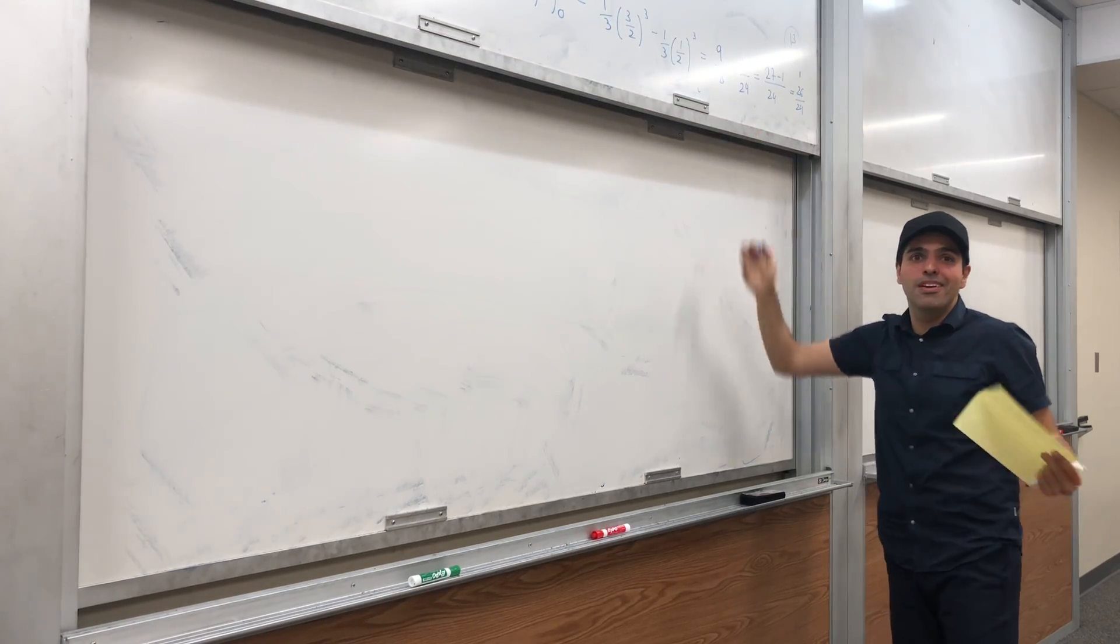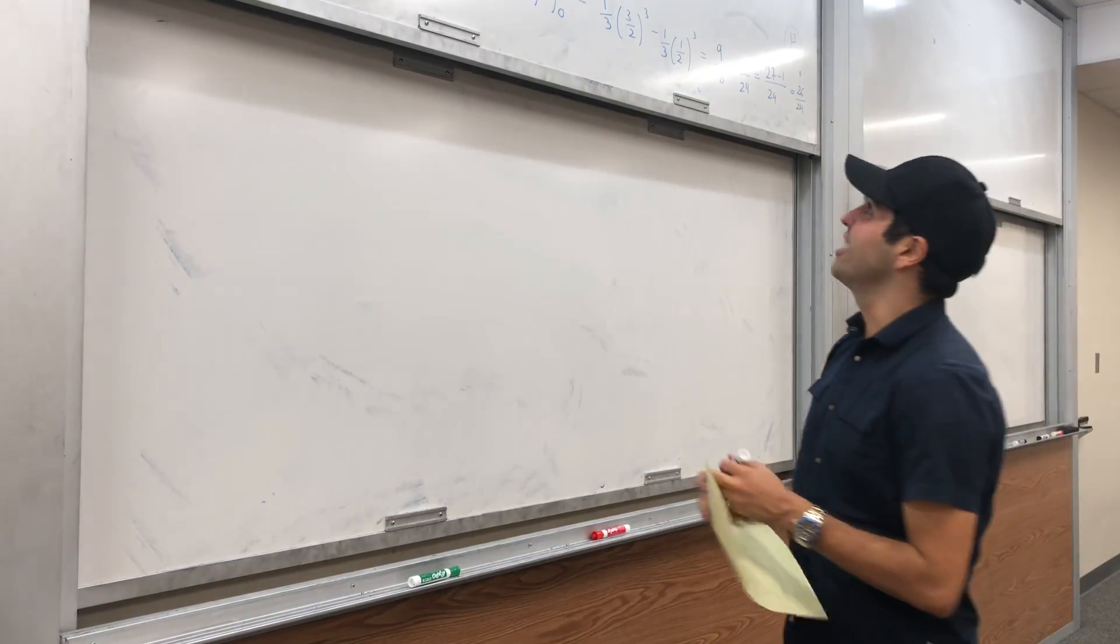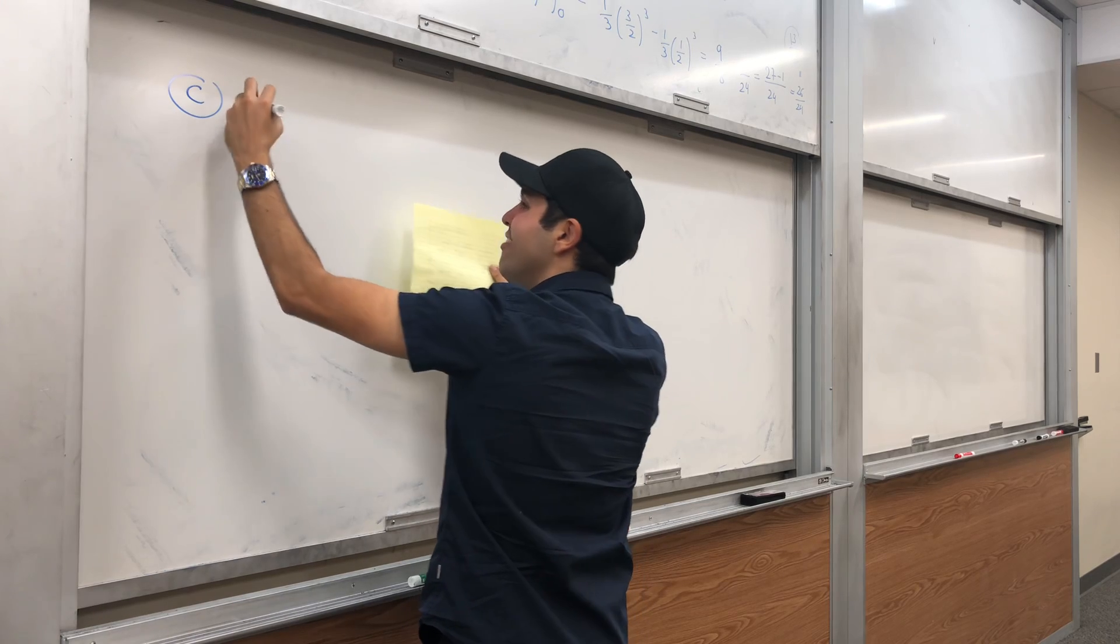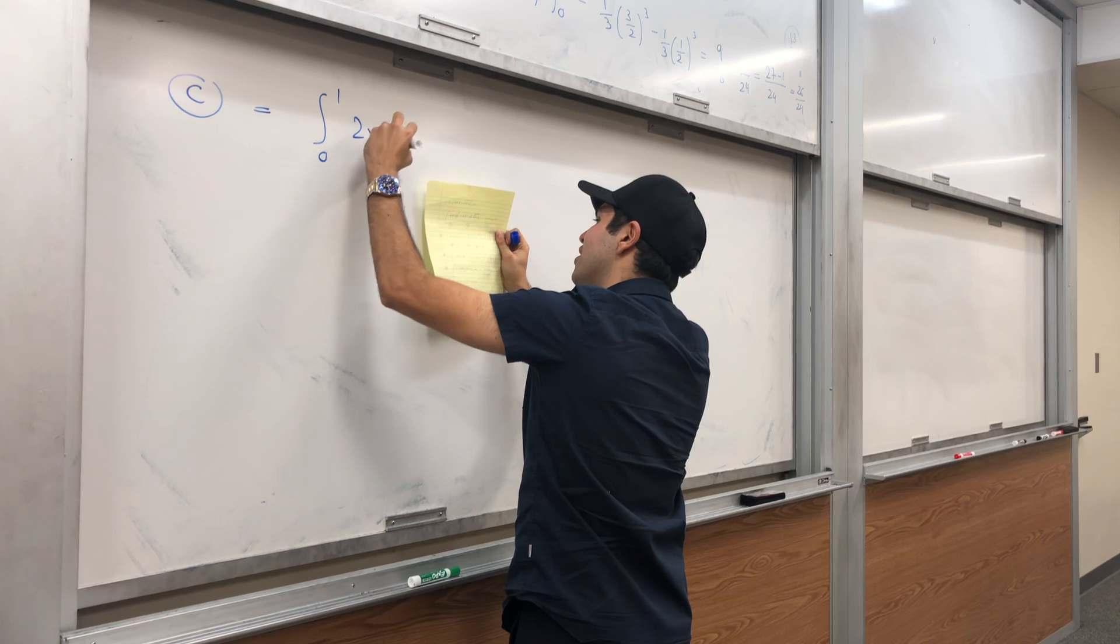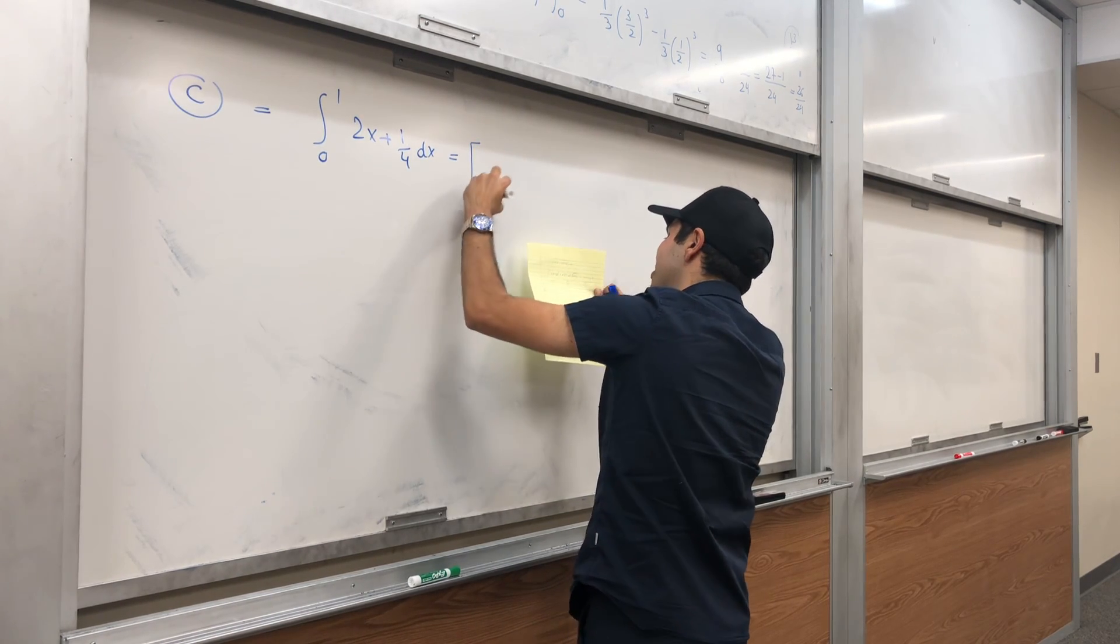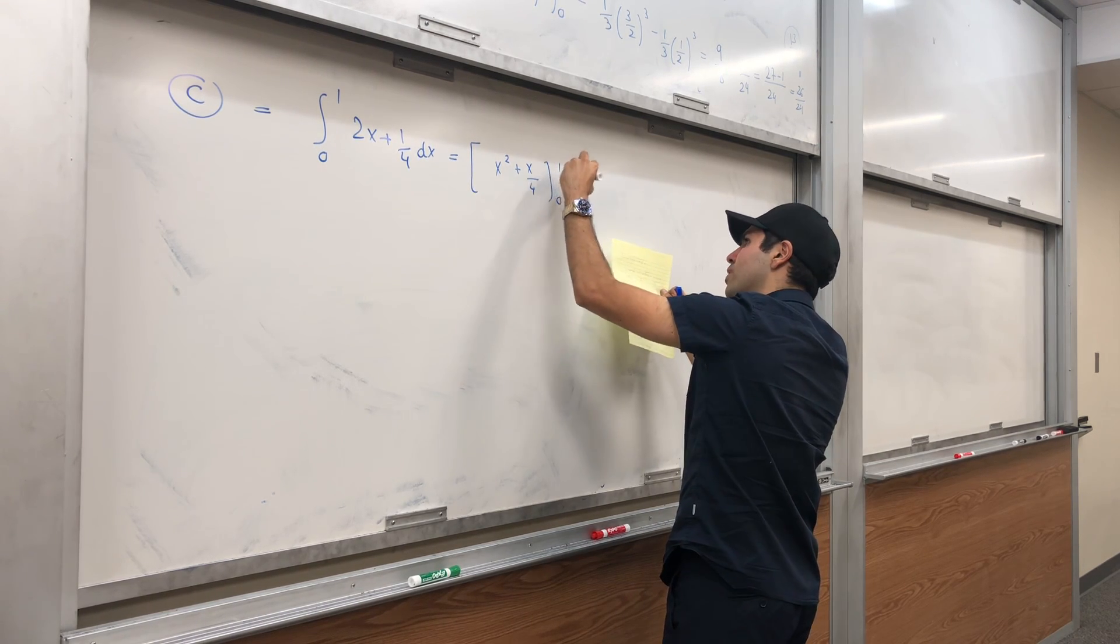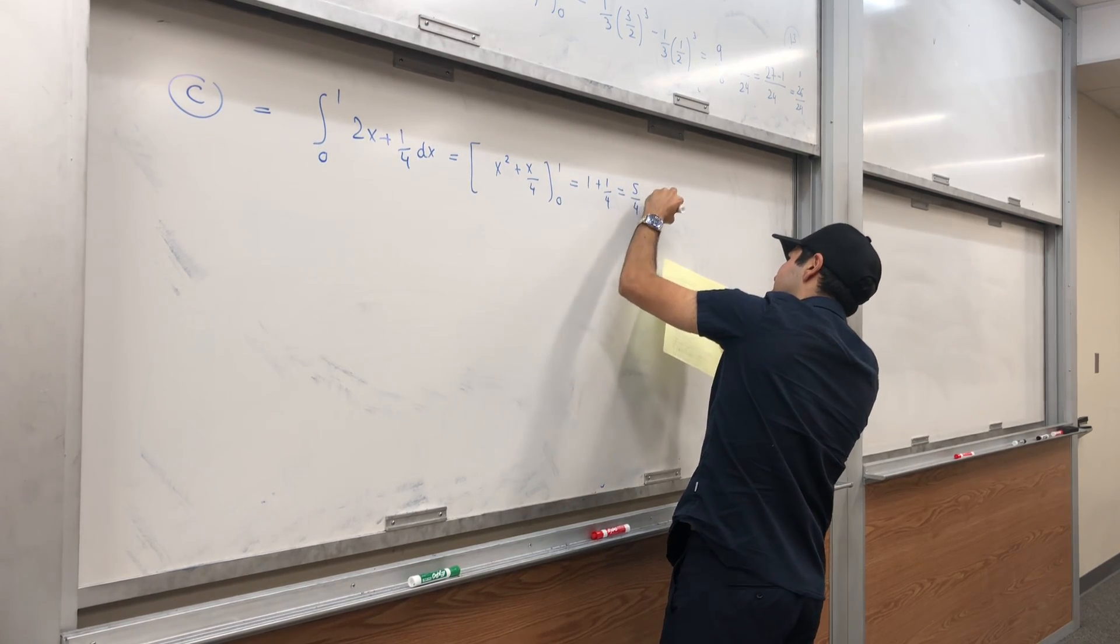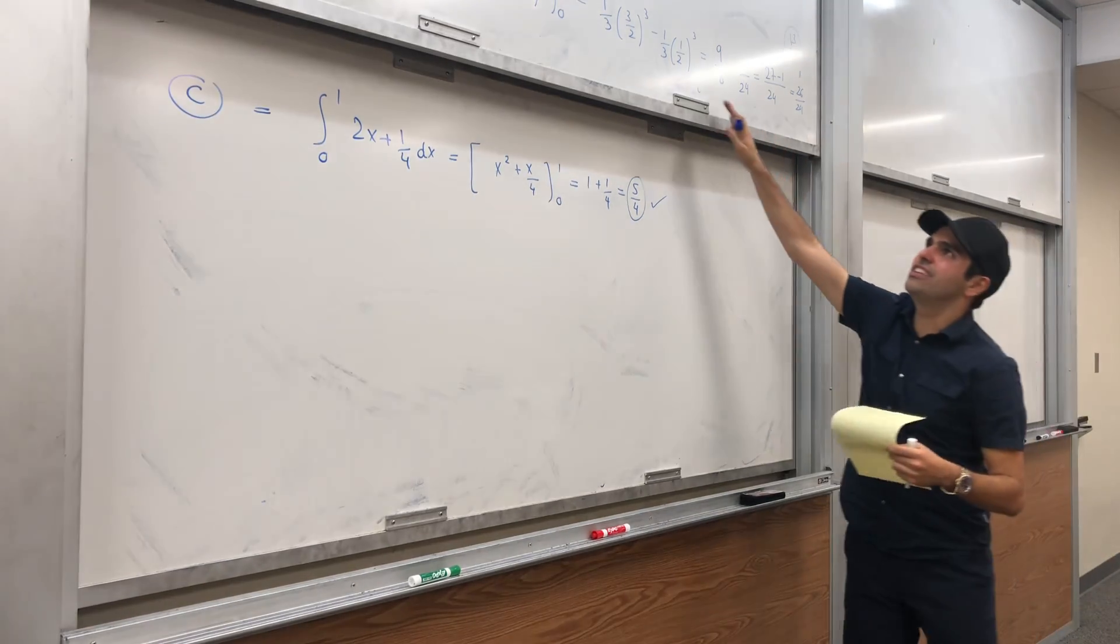You can already see why Wolfram Alpha timed out—it's a long integral. So second part: integral from 0 to 1 of (2x + 1/4) dx. That one's even easier. So you do x² plus x/4 from 0 to 1, and that's 1 plus 1/4, which is 5/4. That's the second part.